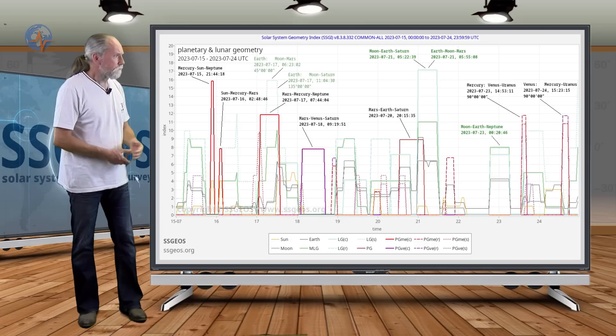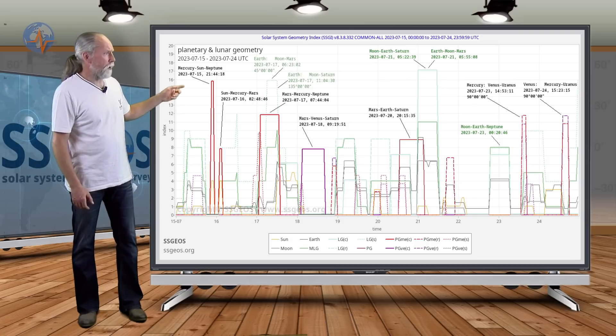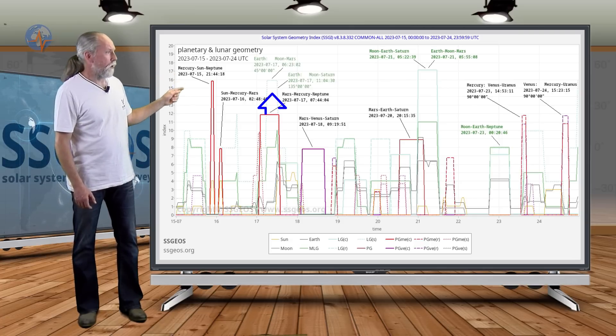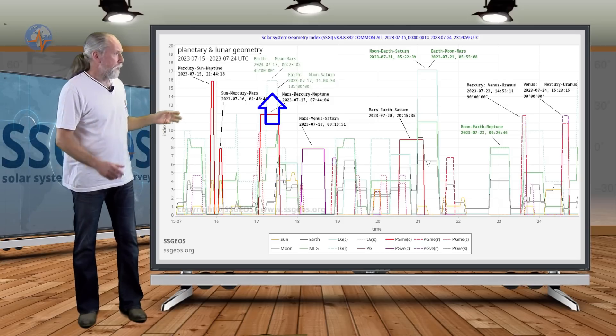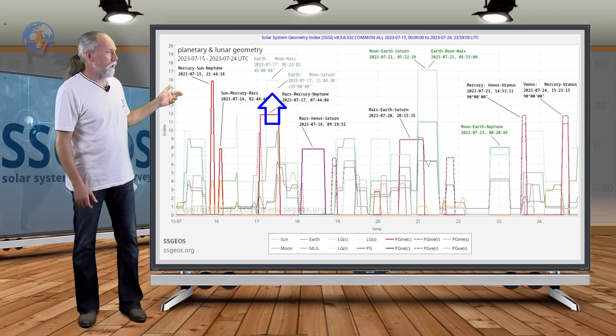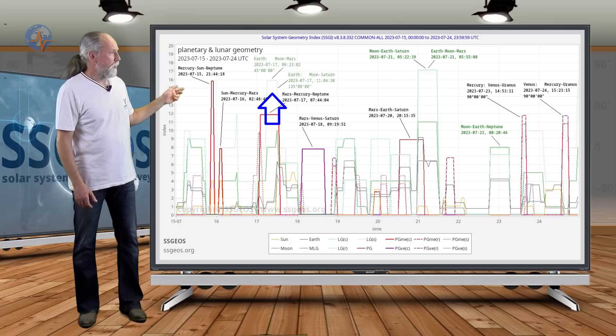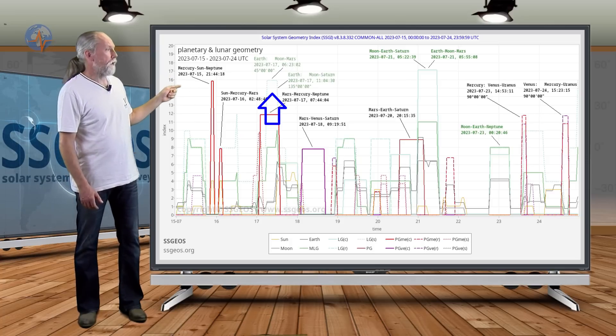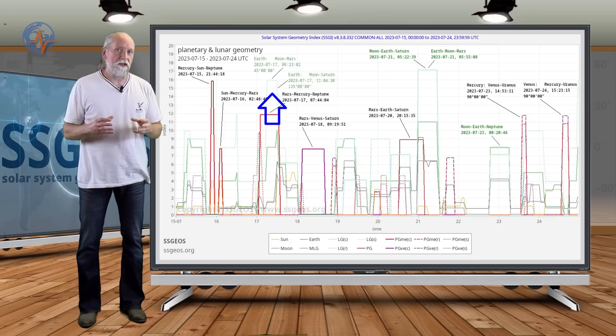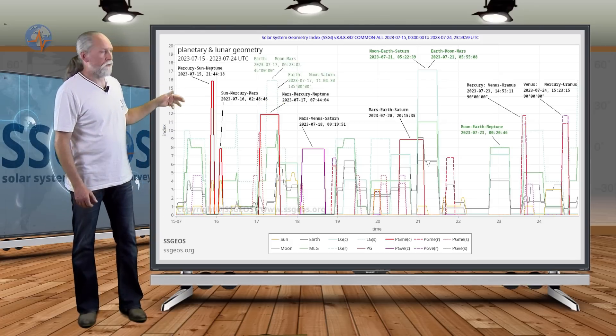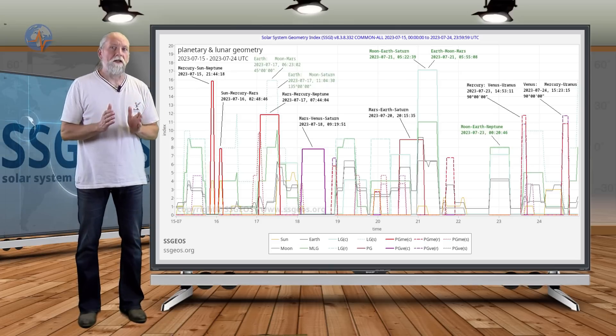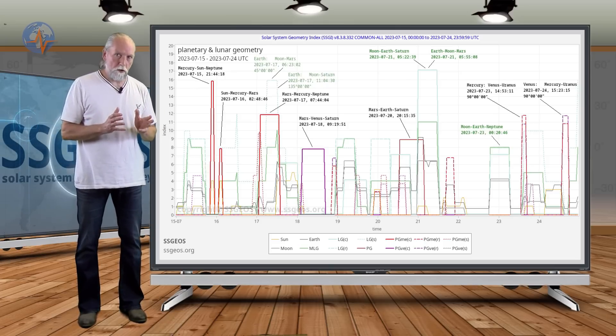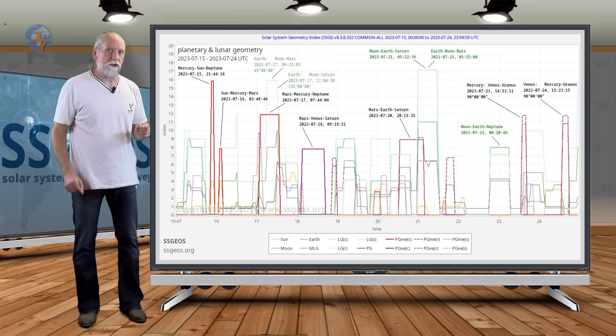We also have lunar geometry coming up, especially on the 17th where Mars and Saturn will be closest in geometry with the Moon. That will be at 623 UTC in the morning, 45 degrees with the Moon, and Saturn at 1104, 135 degrees and 45 degrees. This is also pretty critical. This is probably the closest that the lunar geometry will be with Mars and Saturn. I will show you in a minute in the solar system.